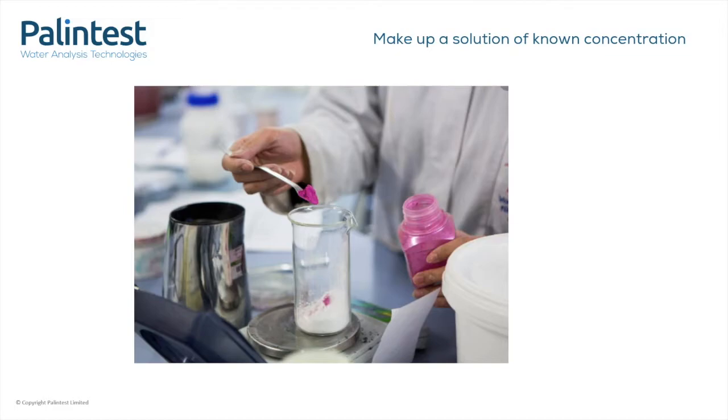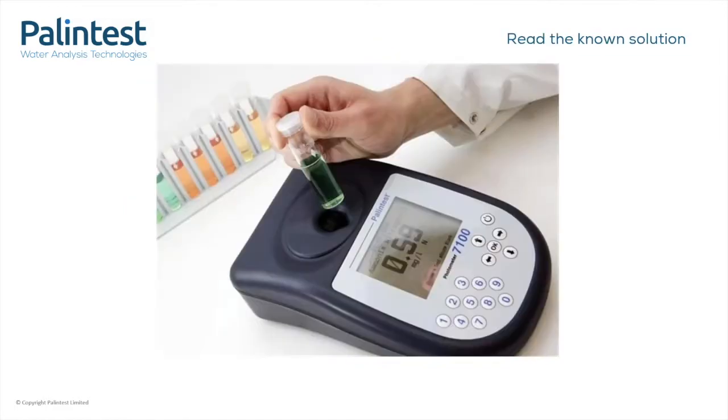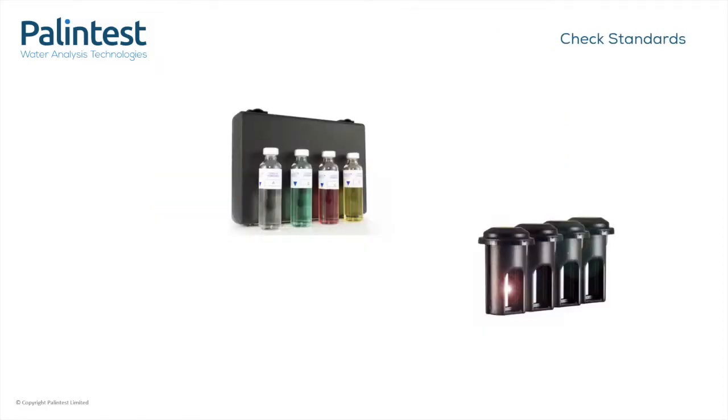However, this is not an easy thing to do. And the result you get on your photometer may tell you how well your photometer is reading, or it may tell you how good you are at making up one milligram per litre solutions of ammonia. The easier option by far is to use check standards.